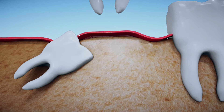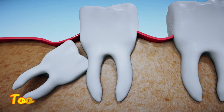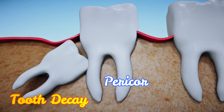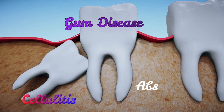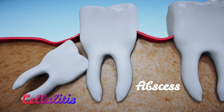Sometimes wisdom teeth that have become impacted or haven't fully broken through the surface of the gum can cause dental problems. Food and bacteria can get trapped around the edge of the wisdom teeth, causing a buildup of plaque which can lead to tooth decay. It can lead to pericoronitis, gum disease, cellulitis, abscess forming, and it can also lead to cysts and benign growths.